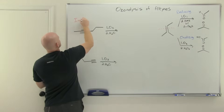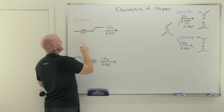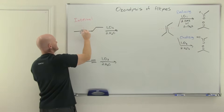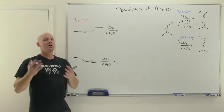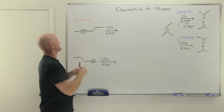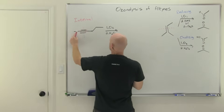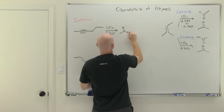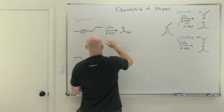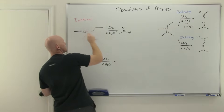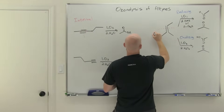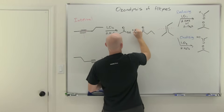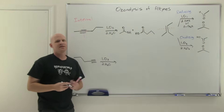For an internal alkyne, cleave your carbon-carbon triple bond. Both carbons are going to become the carbon of carboxylic acids in the product. On the left-hand side, we're going to have a two-carbon carboxylic acid. On the right-hand side, we're going to have a four-carbon carboxylic acid. And there are your two products — that's how we predict it.